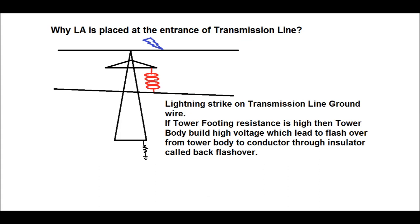Why is LA placed at the entrance of the transmission line? A transmission line tower with a three-phase conductor and one ground wire has been shown in this figure. At the bottom of the tower, the tower footing resistance is shown. Normally, lightning strikes the transmission line ground wire, and the ground wire protects the transmission line conductor from the direct stroke of lightning — that is, it provides a shielding effect to the conductor.